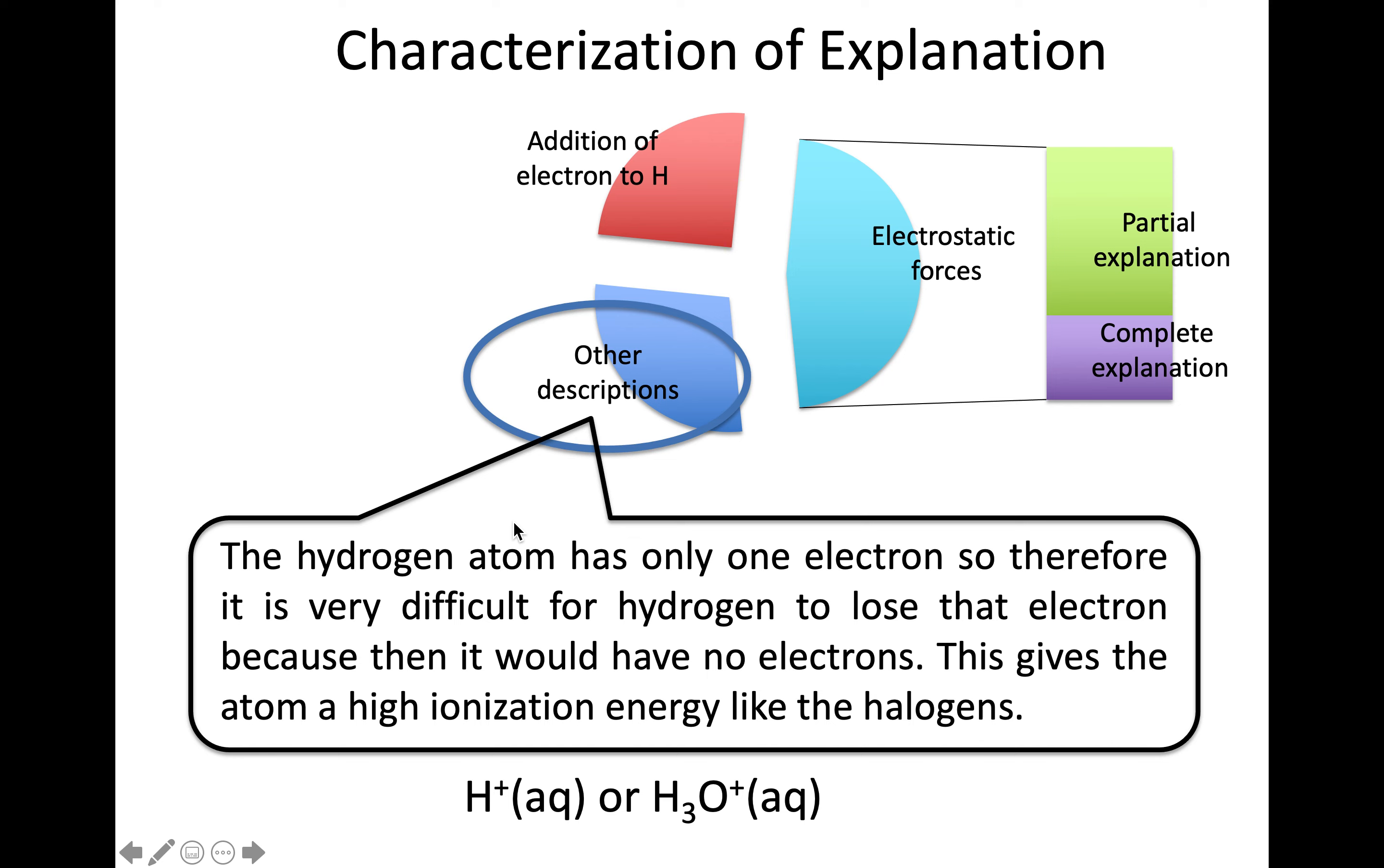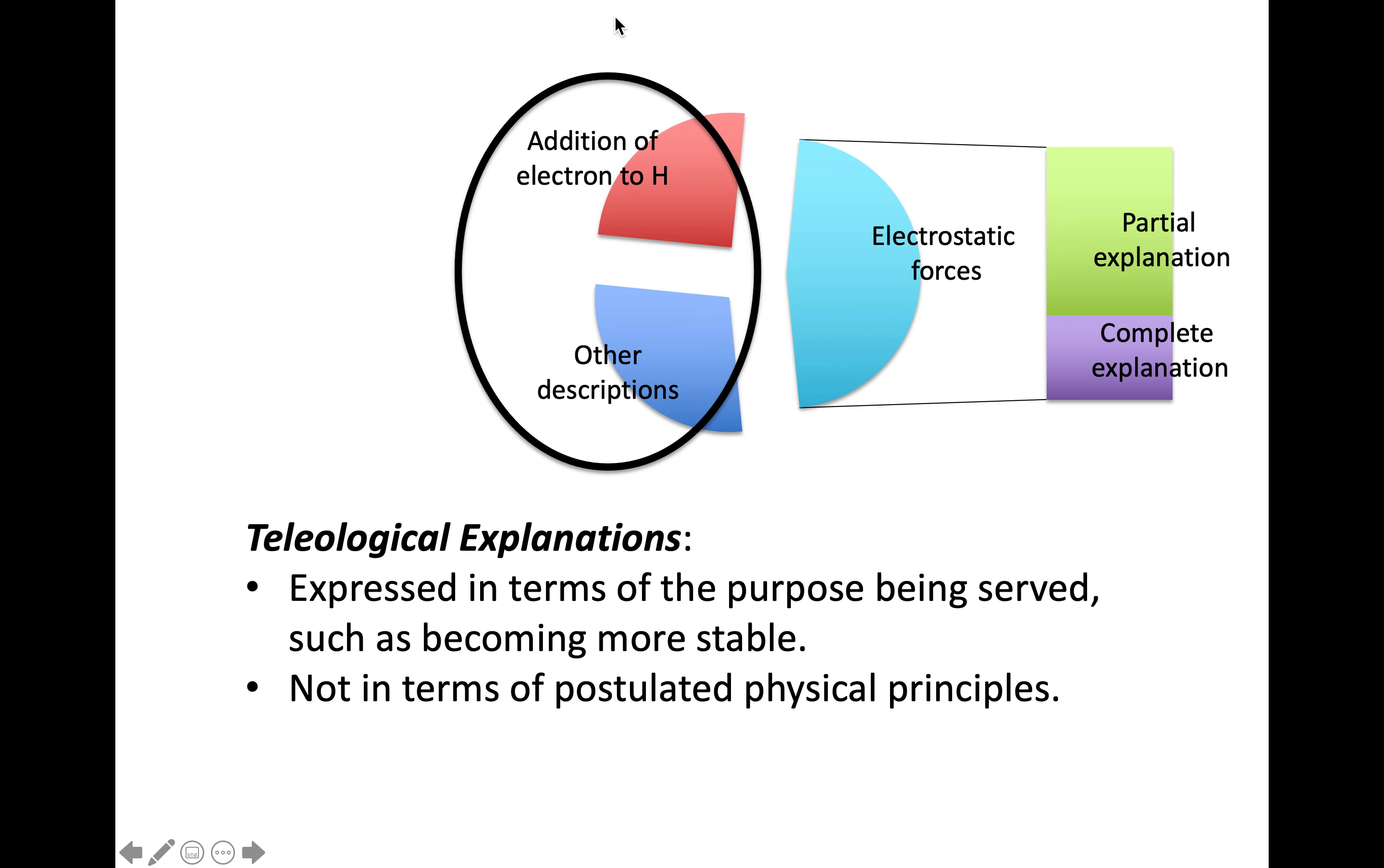What do I mean by other descriptions? Something like this: 'The hydrogen atom has only one electron, so it's very difficult for hydrogen to lose it, because then it would have no electrons.' We know what's ahead—we'll be looking at H+ and hydronium repeatedly. It's fascinating to see this resistance to getting down to zero electrons. These explanations are teleological—expressed in terms of some purpose being served. That purpose is often about becoming more stable. They're not returning to the physical principles relevant to this phenomenon. Instead, there's some higher purpose, some want or desire.